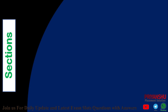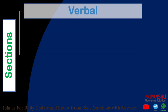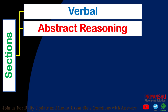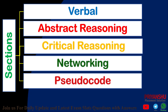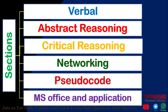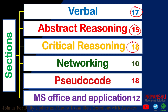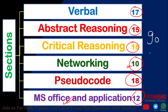There are six sections in the Accenture exam: Verbal, Abstract Reasoning, Critical Reasoning, Networking, Pseudocode, and MS Office/Applications. The question distribution is: Verbal — 15, Abstract Reasoning — 15, Critical Reasoning — 18, Networking — 10, Pseudocode — 18, MS Office — 12, totaling 90 questions. You must solve all 90 questions in 90 minutes, which is a big task.